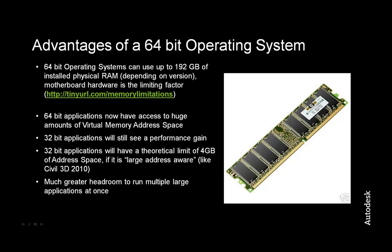For those of you who have upgraded to a 64-bit OS but for whatever reason are still using 32-bit versions of Civil 3D, you are still going to see a performance increase. Those 32-bit applications will now have a theoretical limit of 4GB of virtual memory address space. Remember, on a 32-bit OS we were looking at a limit of 2GB, and a little bit more with the 3GB switch enabled. And lastly, with the additional RAM there is much greater headroom to run multiple applications at once.